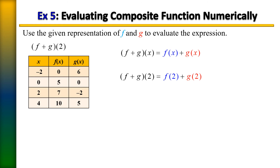Looking at the g of x column for input two, the output is negative two. Combining these outputs — seven plus negative two — gives us an answer of five. So f plus g of two equals five.